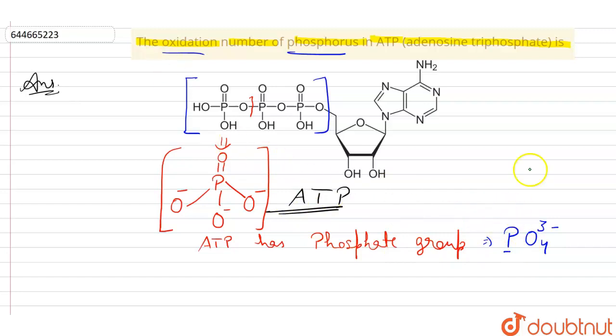So we can easily find this by letting the oxidation number of phosphorus be X. We know that oxygen has the oxidation number of minus two. So from here, the oxidation number of phosphorus is X plus minus two times four equals the overall charge on this species, that is minus three.